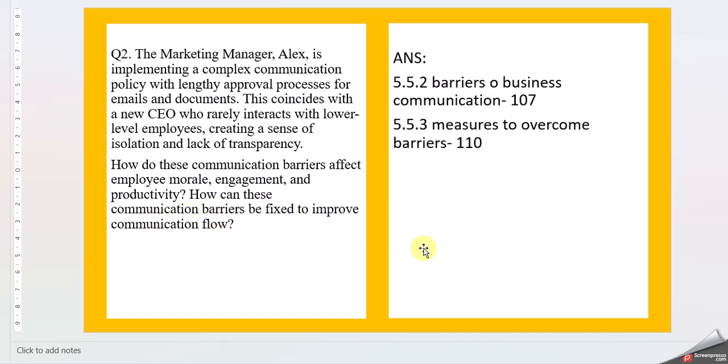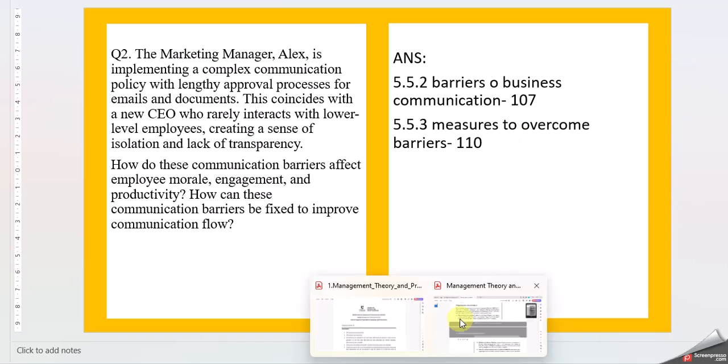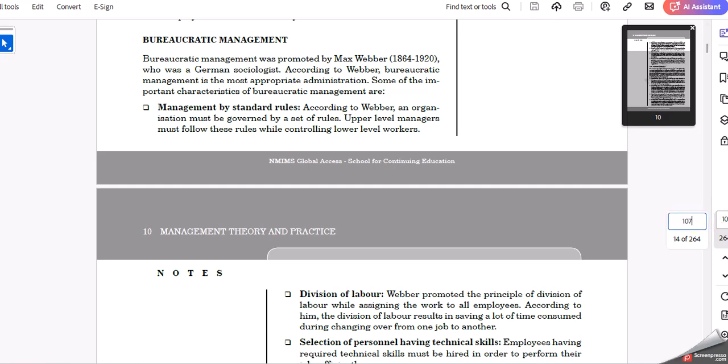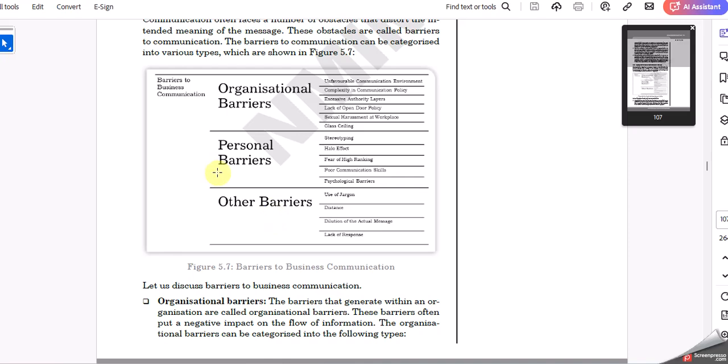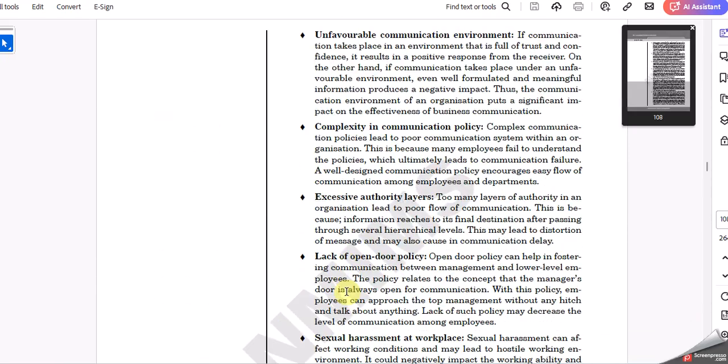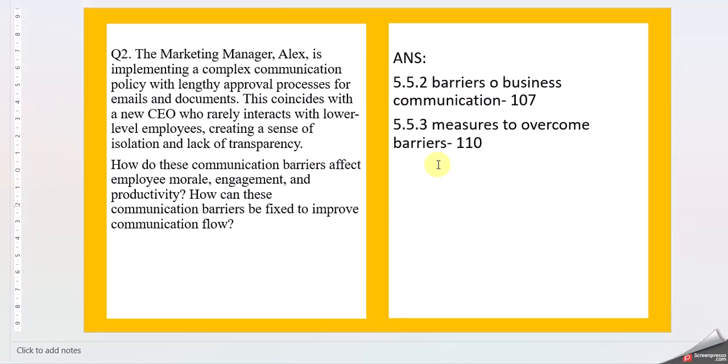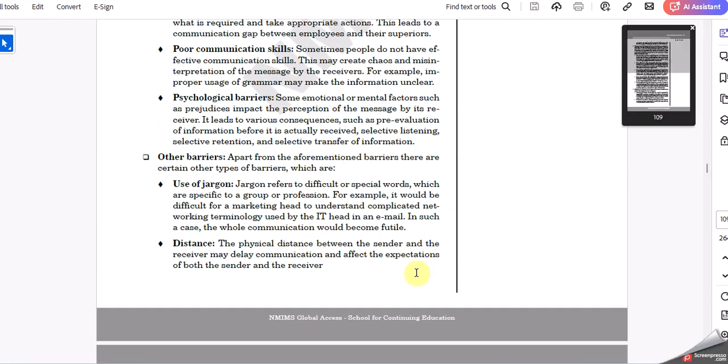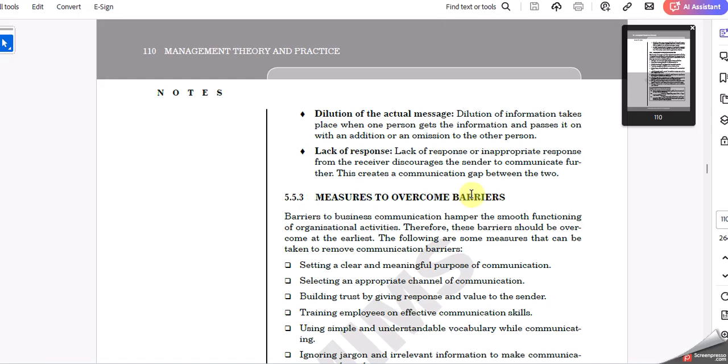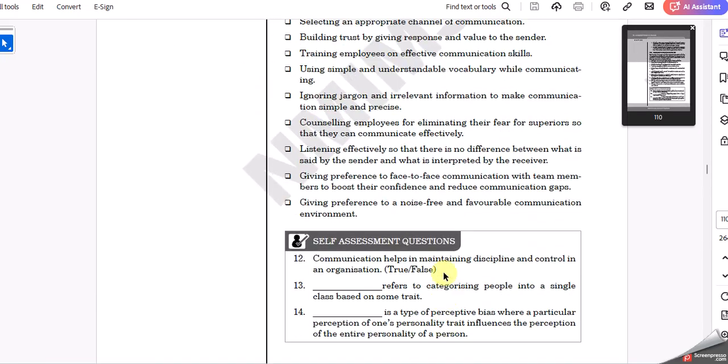Let's see the answer. We can see the barriers of business communication in Chapter 5, page 107. This covers what barriers you can discuss, and measures to overcome barriers. It's not a very straightforward answer.